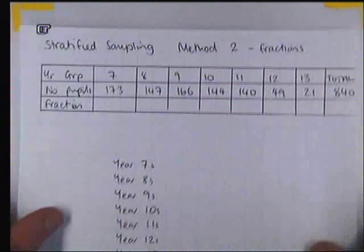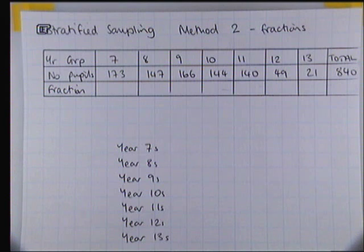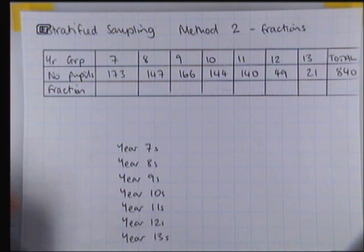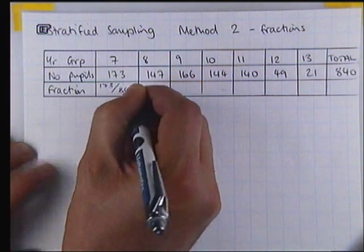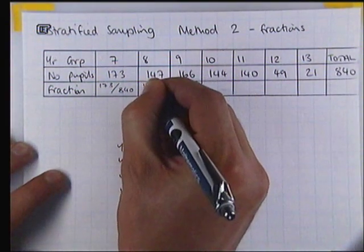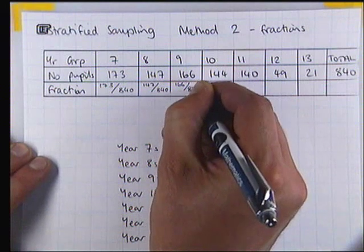Now there's a second method that you can use if you don't like the division method, which I'm going to call fractions. Here we have the same data again, and this time I've added another row to the table which says fraction. We already added up the total when we did the first method, so the total is 840. The fraction that I'm looking for is really the proportion out of 840 in each year group. So in year seven there are 173 out of 840. In year eight there are 147 out of 840, etc.